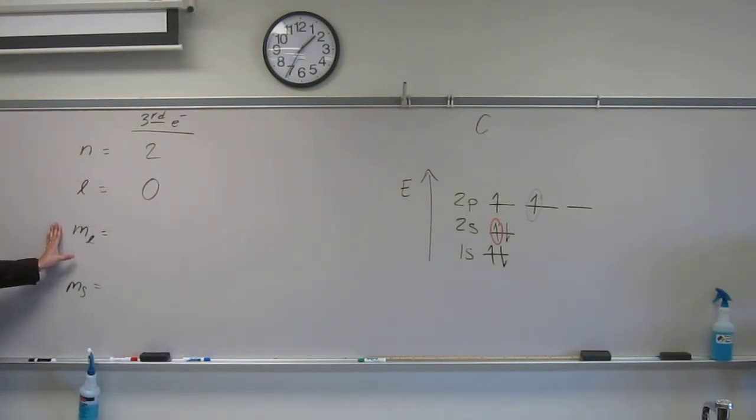And m sub l correlates directly with l, right? So it's got to be zero as well.